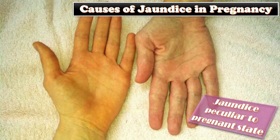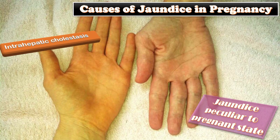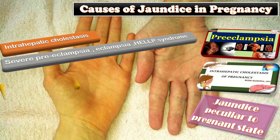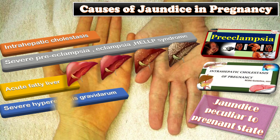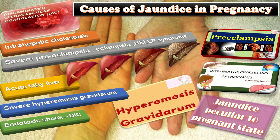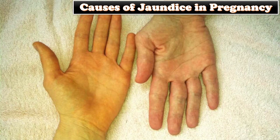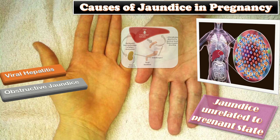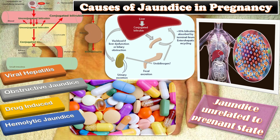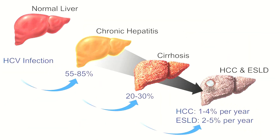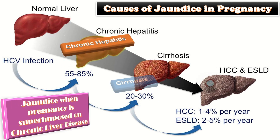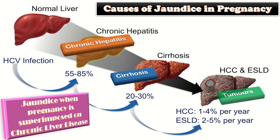When jaundice is peculiar to the pregnant state, the causes include intrahepatic cholestasis, severe preeclampsia, eclampsia, or the HELLP syndrome, acute fatty liver of pregnancy, severe hyperemesis gravidarum, and toxic shock or DIC. Jaundice unrelated to the pregnant state includes viral hepatitis, obstructive jaundice, drug-induced jaundice, or hemolytic jaundice. When pregnancy is superimposed on chronic liver disease, causes include chronic hepatitis, cirrhosis, or tumors.